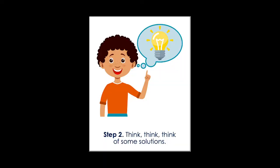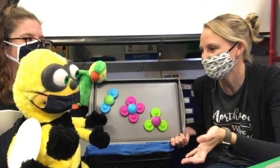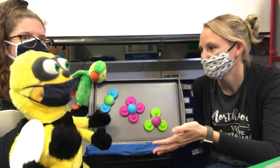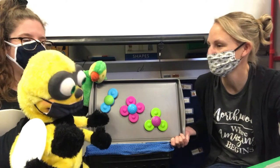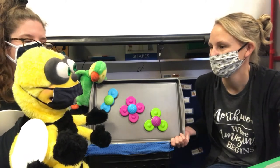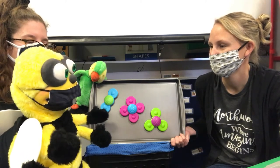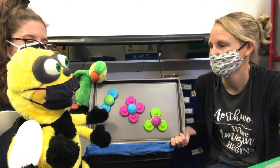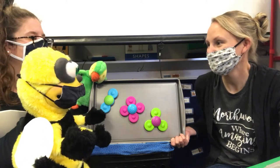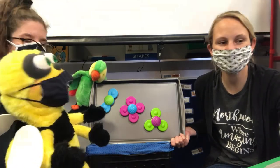So step number two: think of a solution to your problem. A solution is an idea that you might have. So think of an idea for how you could get to play with the spinners. What if I could, maybe, ask if I could have a turn? That's a great idea!